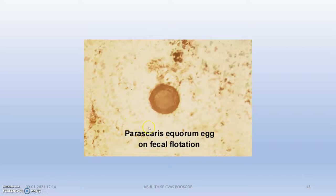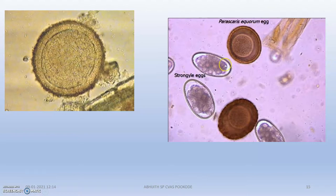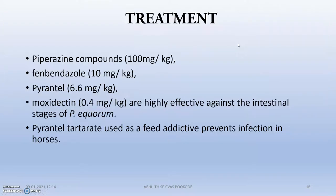This shows the Parascaris equorum egg under the fecal flotation method. You can see the egg with the L2 larva inside. This image also shows a comparison between Strongyle eggs and Parascaris equorum eggs.